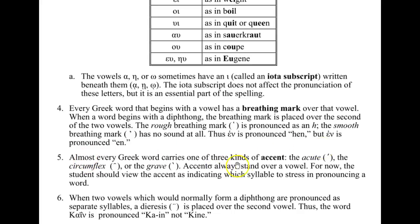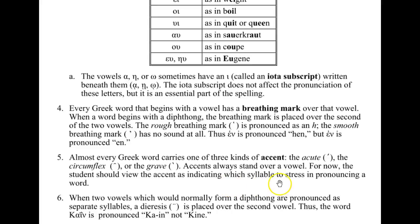Almost every Greek word carries one of three kinds of accents: the acute, the circumflex, or the grave. Accents always stand over a vowel. For now, you should view the accent as indicating which syllable to stress in pronouncing a word. You don't need to know the names of the accents — just recognize that these marks indicate where to place the emphasis.